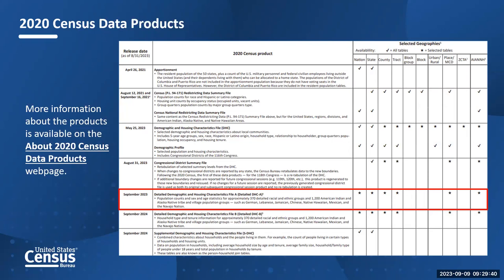Here's a list of our 2020 Census data product releases. Highlighted here is September 2023 — the Detailed Demographic and Housing Characteristics File A, which is set to release on the 21st of this month. The detailed DHC-A provides population counts and sex-by-age statistics for approximately 1,500 detailed race and ethnic groups and detailed American Indian and Alaskan Native tribes and villages. A webinar discussing the upcoming release is set for next week, September 13th.